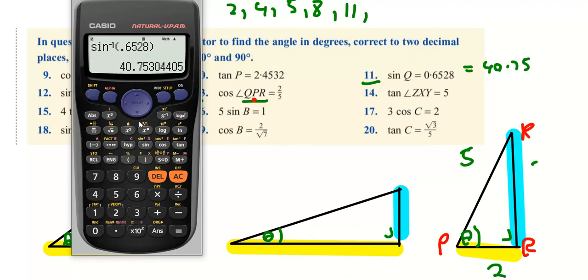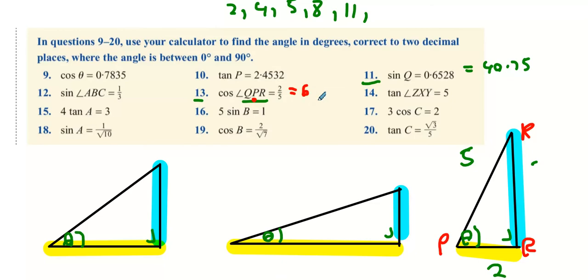Once again, we're going to cos inverse this. So that's shift cos inverse 2 over 5. I reckon it's going to be above 45 degrees. There it is: 66.42 degrees, so the steep angle I chose is right.